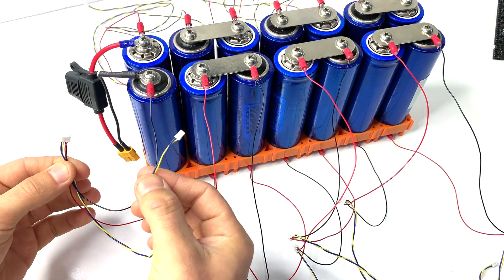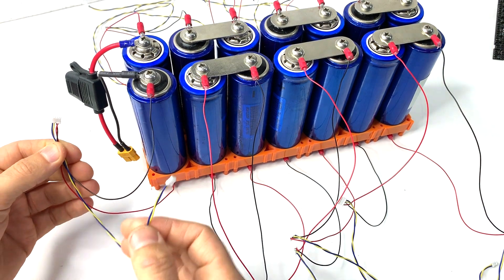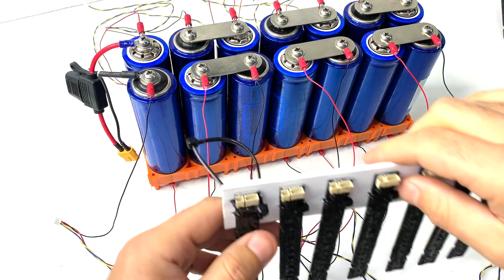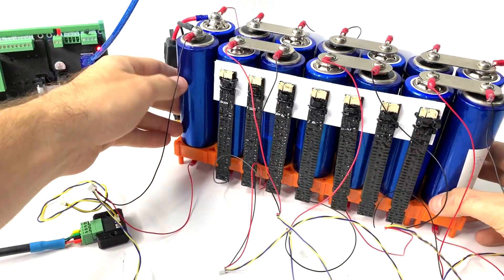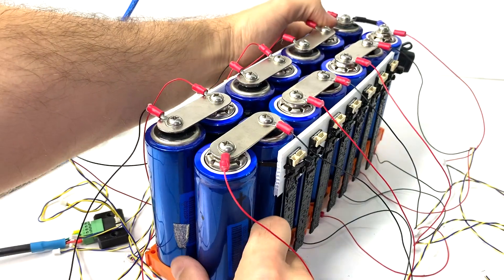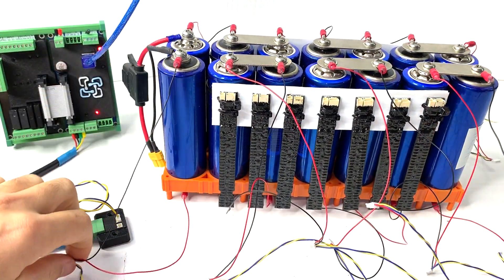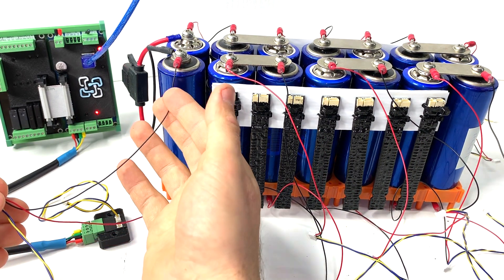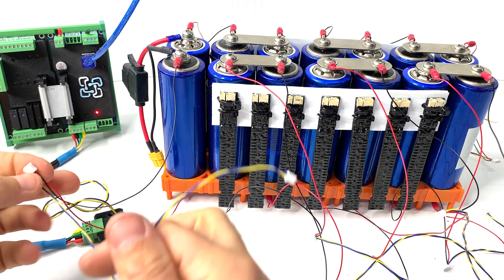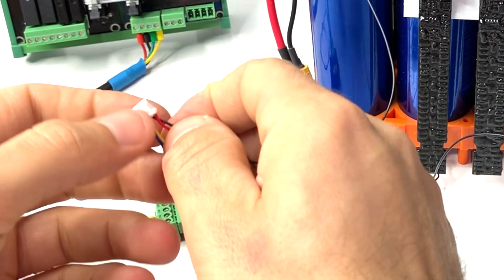Now you see all 14 cell monitor cables are connected to the battery terminals. Now it's time to mount the cell monitors to the cells. We have 14 cell monitors ready to go, mounted on the battery pack, with all 14 cell monitor wires connected to each battery terminal—red to positive, black to negative.